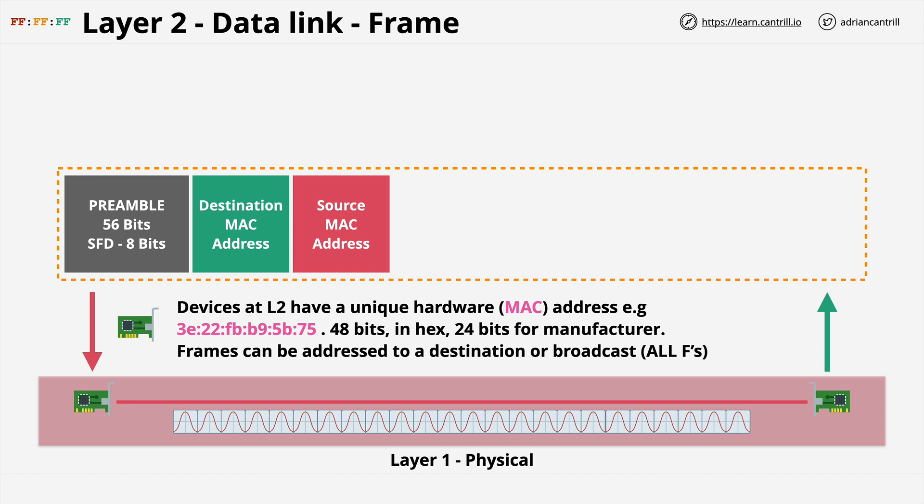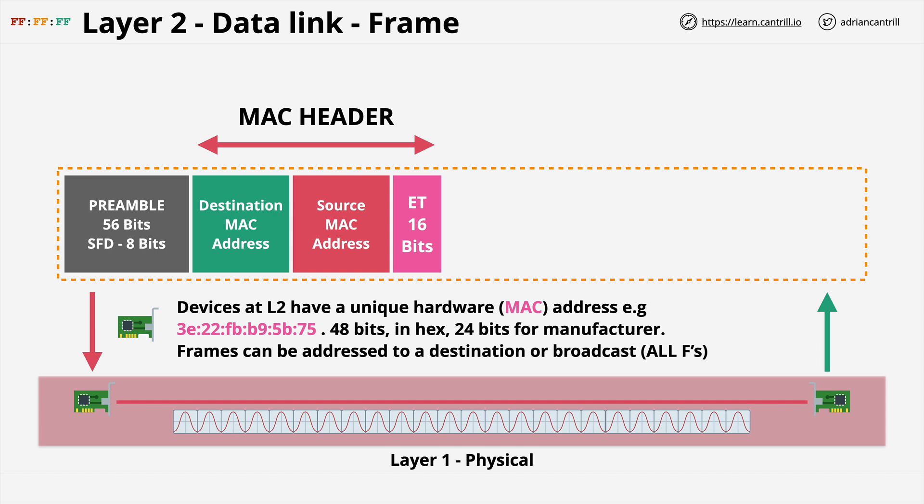The source MAC address field is set to the device address of whatever is transmitting the frame, and this allows it to receive replies. Next is Ethertype, and this is commonly used to specify which layer 3 protocol is putting its data inside a frame. Just like layer 2 uses layer 1 to move raw bitstream data across the shared physical medium, layer 3 uses layer 2 frames for device-to-device communication on a local network. A common example might be IP, or the Internet Protocol. These three fields — preamble/SFD, MAC addresses, and Ethertype — are commonly known as the MAC header. They control the frame destination, indicate the source, and specify its function.